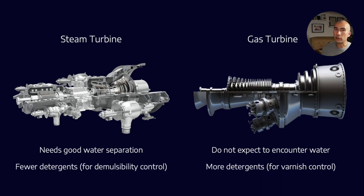So in a gas turbine, where we may have a preference to control varnish and varnish precursors, we may add more detergents into the formulation to help control those deposits. But we can't do that on a steam turbine because we want the emulsion to be able to break. So this can help explain why some oils are different from each other.